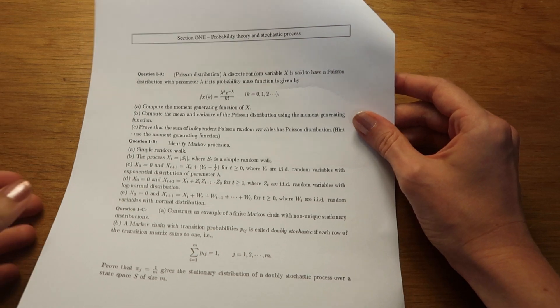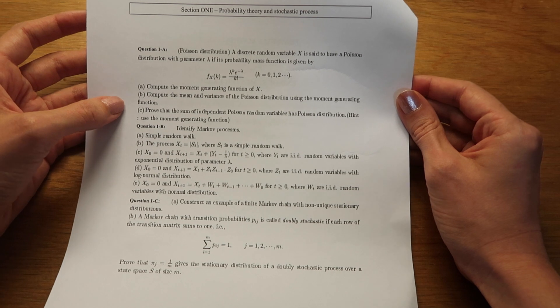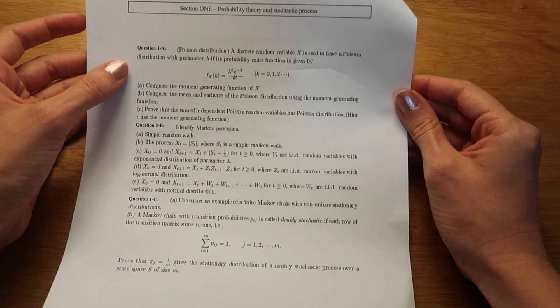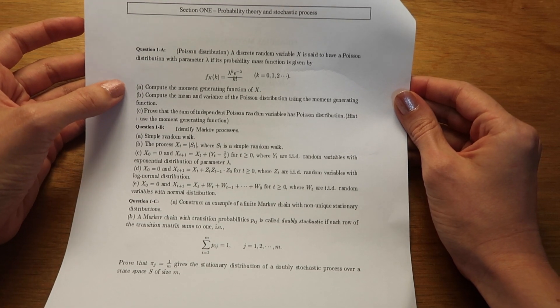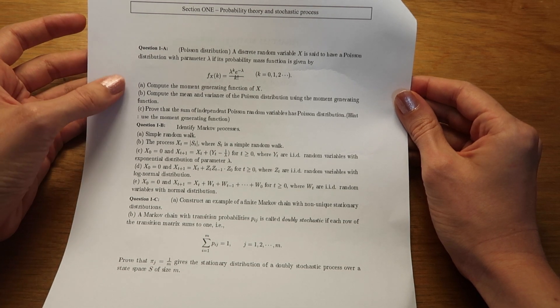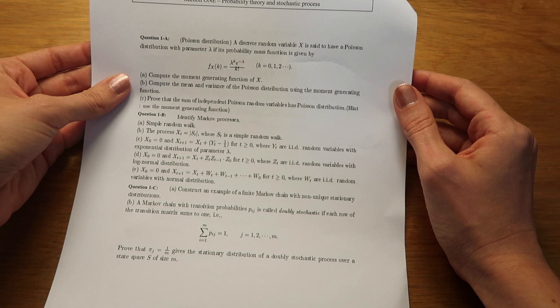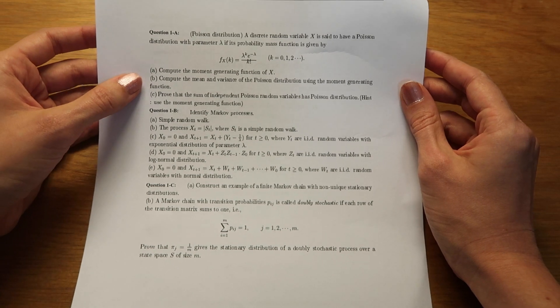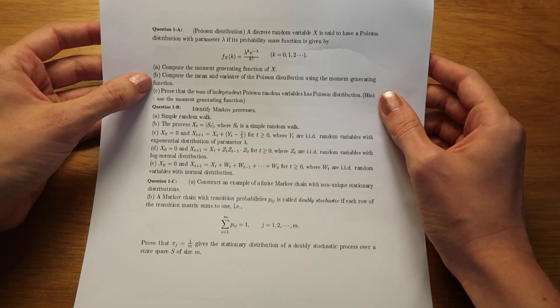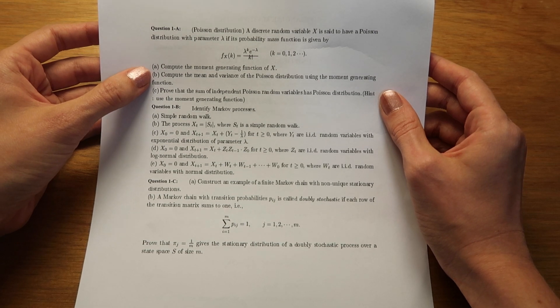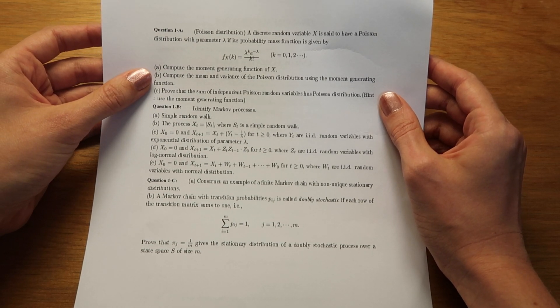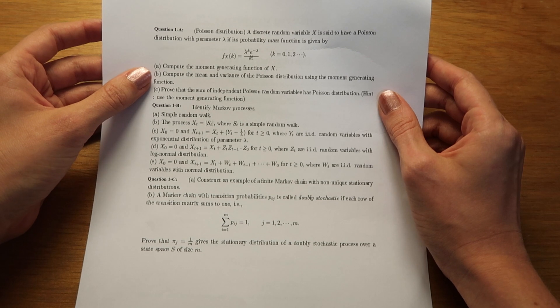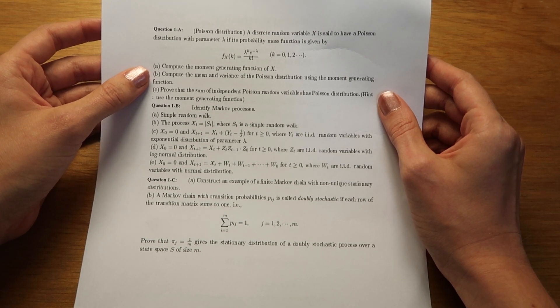First we have a question about the distributions of random variables. In this case we have Poisson distribution, and that's something that I have encountered before out of the context of finance. It can be used for all sorts of things, most commonly the example is working out how many customers you might expect in a certain amount of time given some averages that you already know. Question 1A is compute the moment generating function of x, which requires knowing what a moment generating function is. I did google that and it seems to be a way that simplifies finding the mean and variance.